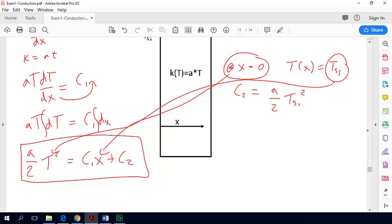So now we apply our other boundary condition which states that at x equals L, t as a function of x is equal to Ts2. So now we would do the same thing and we would get a over 2 multiplied by Ts2 squared is equal to c1 times L plus c2. We already know what c2 is, that's shown right here.